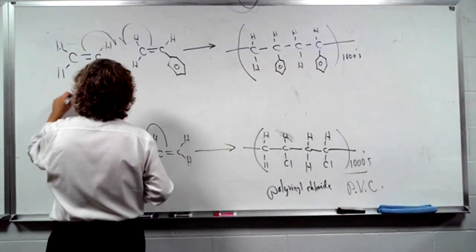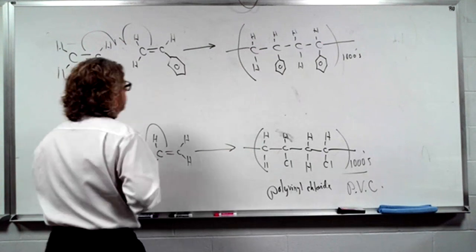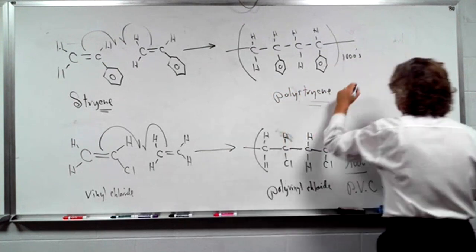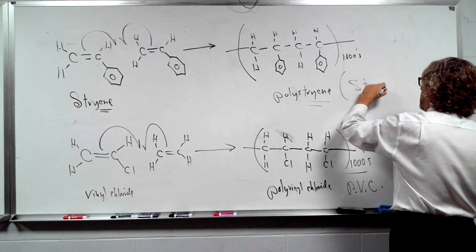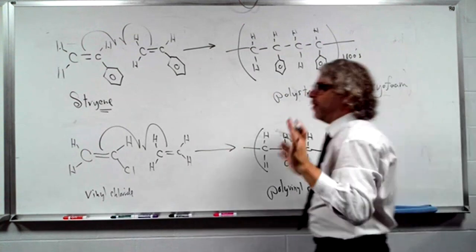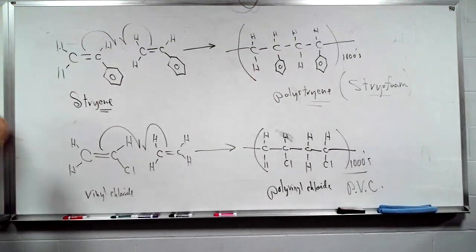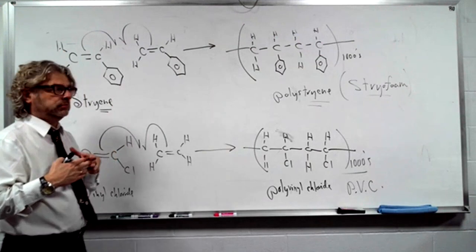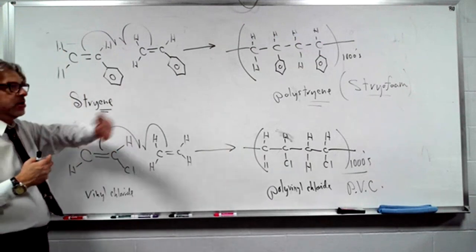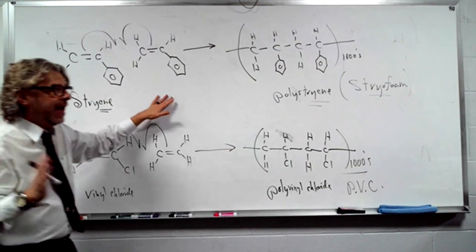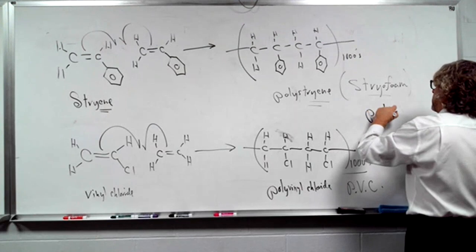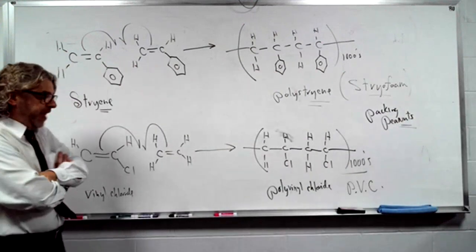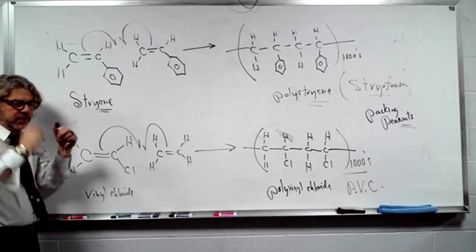This is styrene. So, this would be polystyrene or styrofoam. What properties does PVC pipe have? Because of chlorine, it's hard to make a pipe. What properties does styrofoam have? They're fluffy. It's something used for packing materials. But it's not going to go anywhere in nature.